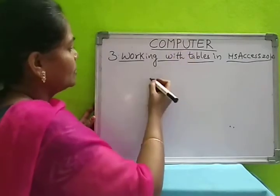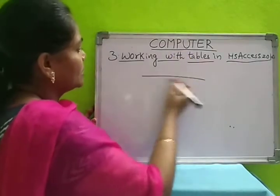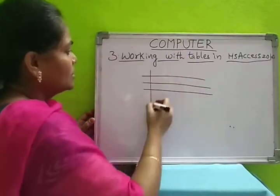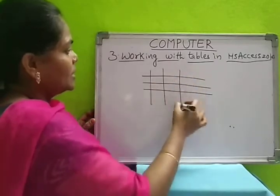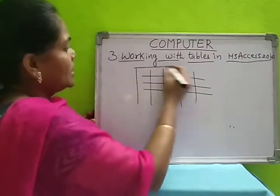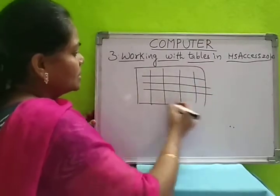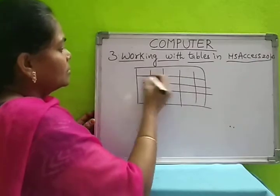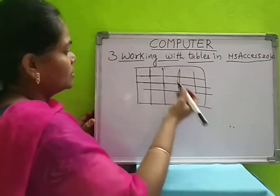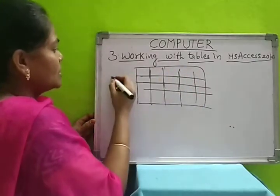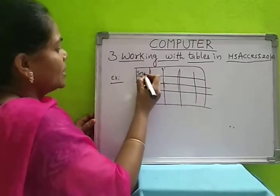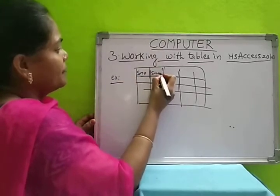You know how a table looks from earlier classes — columns and rows. In a table it contains columns and these are the rows. For example, in a student table, we will write student number, student name, subjects, phone number, date of joining, or date of birth — like that we will write.